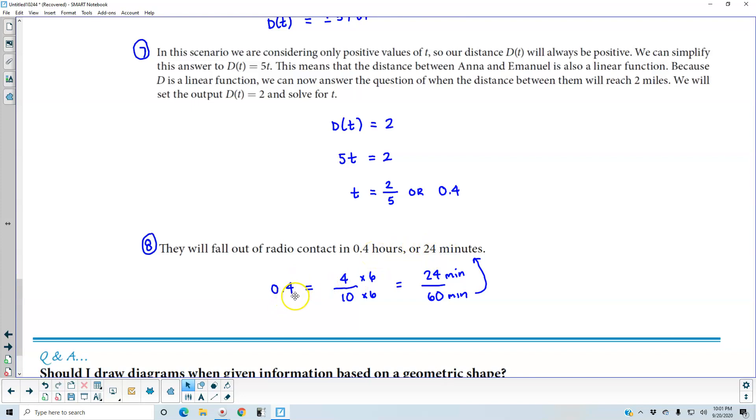So 0.4 hours can be converted to minutes by the following: we want to get 60 minutes in an hour, so 4 times 6 is 24 minutes. 10 times 6 is 60 minutes, which gives us 24 minutes.